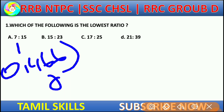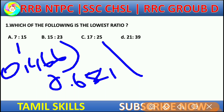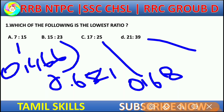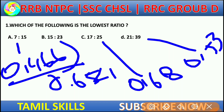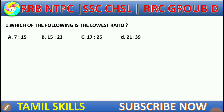If you select option B, you get 15 by 23. Converting to decimal gives 0.53. The lowest value is 0.46. So the answer is A, which is 15 by 23 giving the lowest ratio.